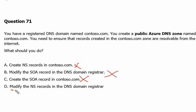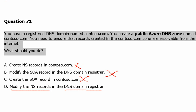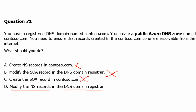Therefore we are left with Option D: modify the existing NS records in the DNS domain registrar. These name server records specify the name servers responsible for handling DNS queries for the Contoso.com domain. To make the records in the Azure DNS zone resolvable from the internet, we need to update the name server records at the DNS domain registrar to point to the name servers provided by Azure. Therefore, Option D is the correct answer.